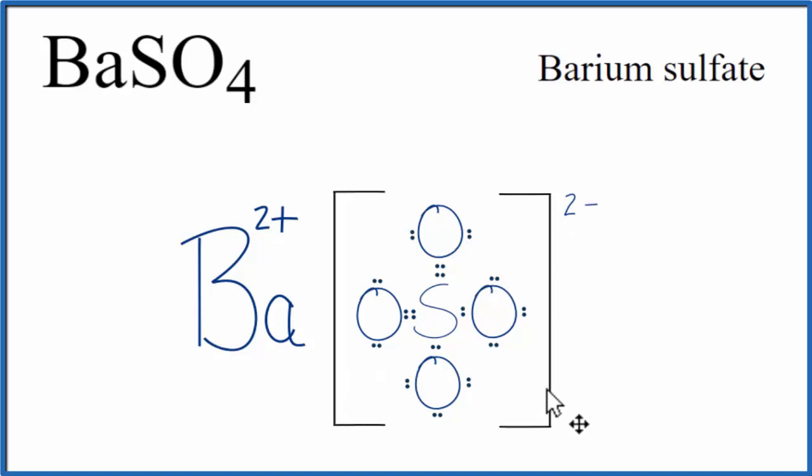We have these brackets here to show that the electrons were transferred. The barium lost them and the sulfate gained them, so they're not sharing electrons like we do in a covalent bond.